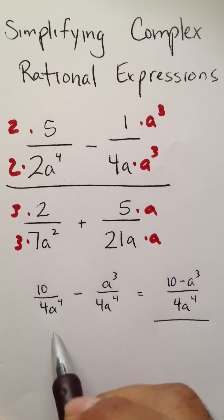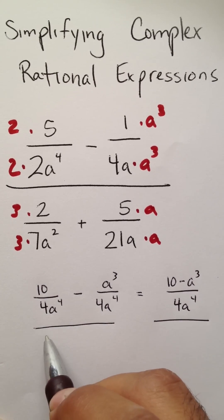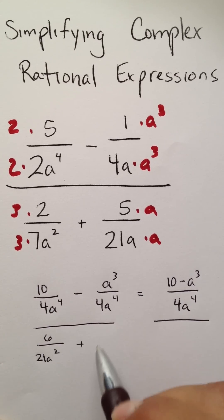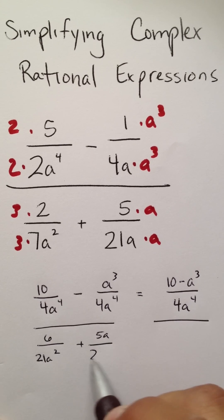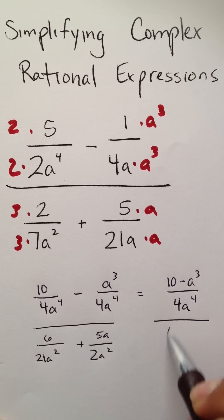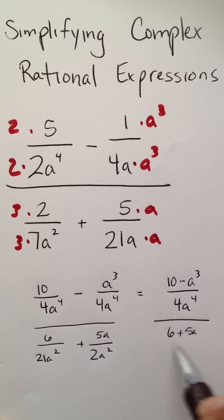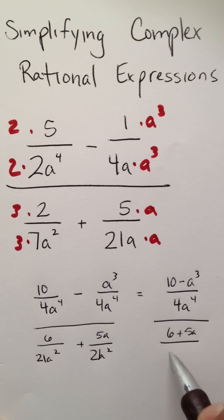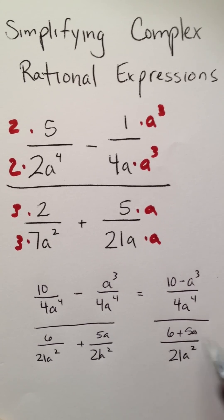Your denominator is then going to be 6 over 21a to the second power plus 5a to the second power, which now gives you 6 plus 5a all over, excuse me, that was a 21 over there, 21a to the second power.